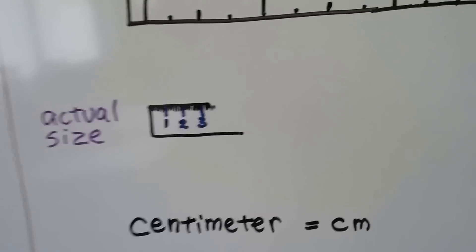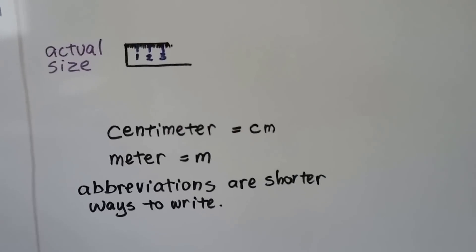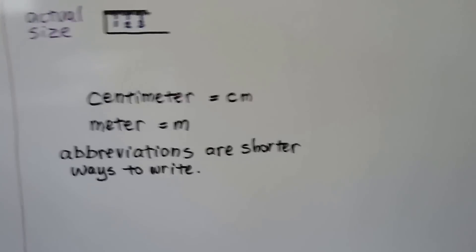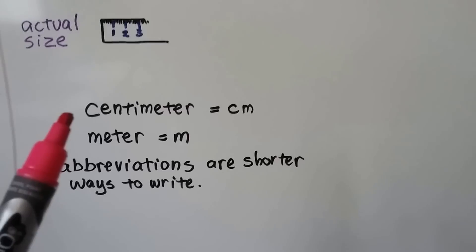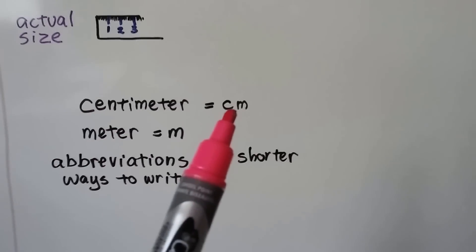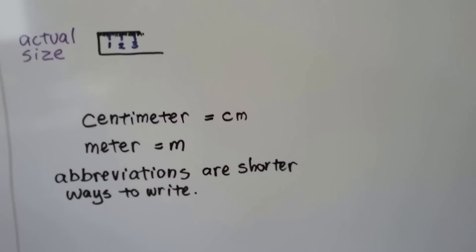We're going to be talking about the metric system in this video. And abbreviations, which are shorter ways to write things. The abbreviation for centimeter is cm, and for meter, it's just m.